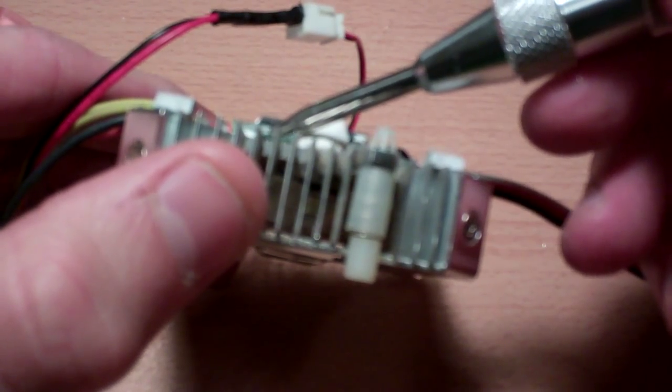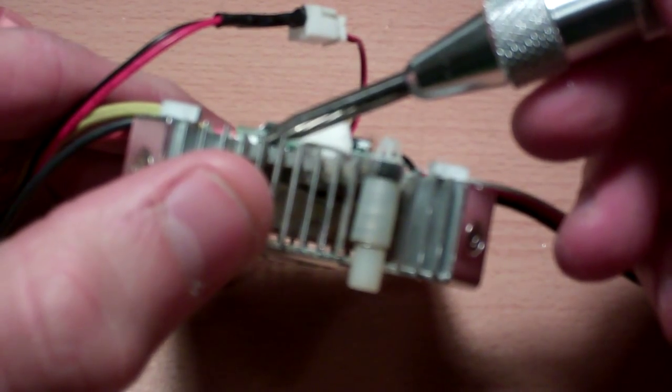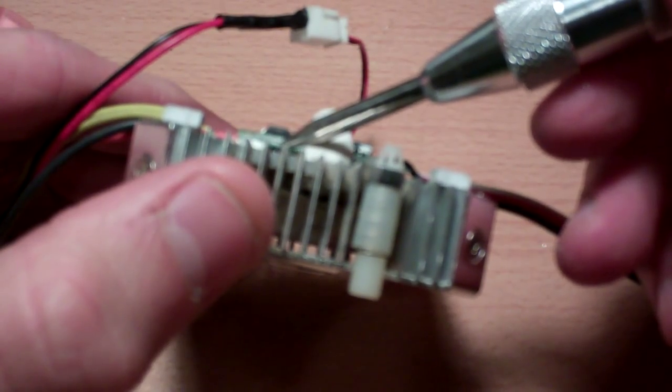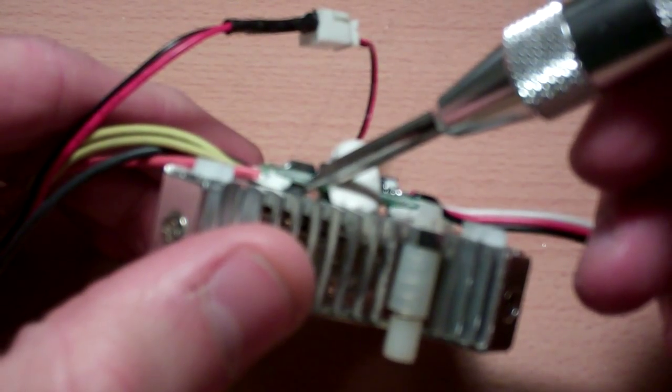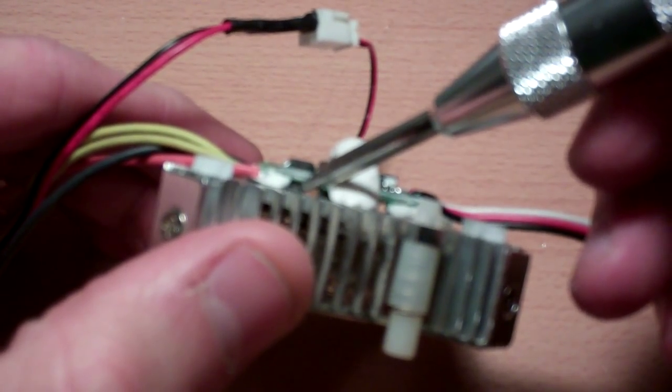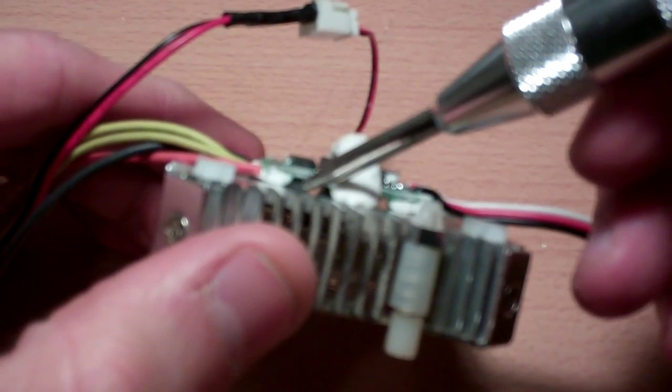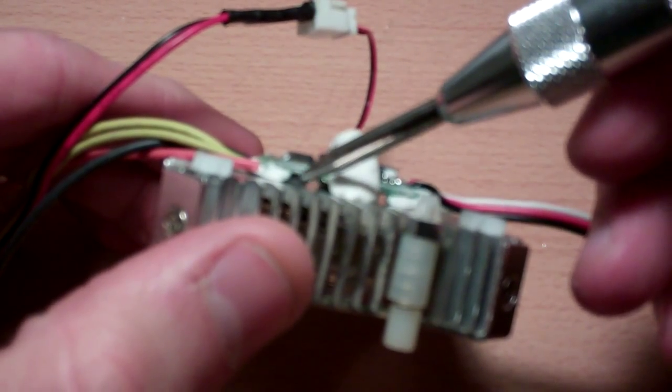I put some thermal compound, some Arctic Silver thermal compound. You can't really see it, but I put it between the MOSFETs on the ESC and the heatsink just so that there was a good bond,